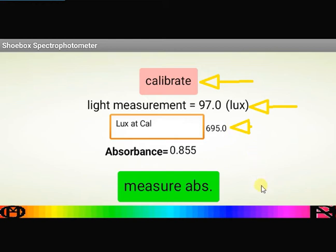Then you've got the measure absorbance button. So once you put your sample in, you can press measure absorbance and it will do the calculation based on that measurement and the calibration measurement to display this absorbance value.